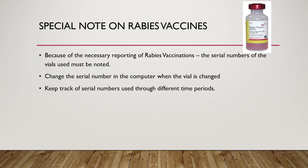A special note on rabies vaccines: because we have to report rabies vaccinations with serial numbers on the certificates, we need to note those on the vials we are using. When a vial is changed, we need to update that serial number in the computer so it matches the certificate that's printed out. Keep a log of those serial numbers used through different time periods. Often a number of vials will share the same serial number, but we still have to keep track of that.